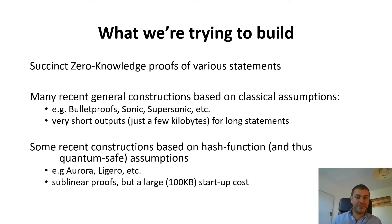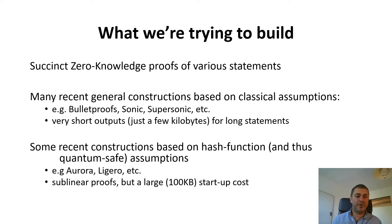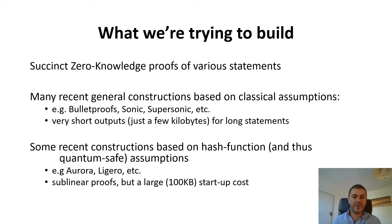There have also been some recent constructions where security relies just on the collision resistance of arbitrary hash functions. These schemes are advantageous over the ones above if you care about quantum security, because arbitrary hash functions are quantum secure. Schemes like Aurora and Ligero are also succinct, with Aurora being logarithmic in the length of the statement. But one of their negatives is that they have a large startup cost — maybe a few hundred kilobytes minimum — though after that, the added factor is sublinear.